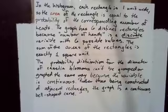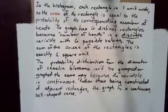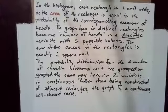In the histogram, each rectangle is one unit wide, so the area of the rectangle is equal to the probability of the corresponding number of heads. The graph has six distinct rectangles because the number of heads is a discrete variable with six possible values. The sum of the areas of the rectangles is exactly one square unit.